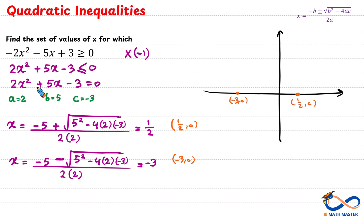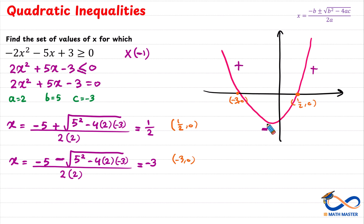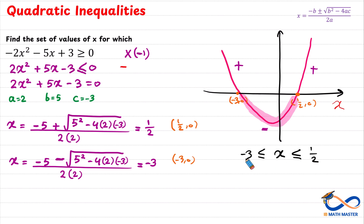Here we have the positive part above and the negative part below. But this time we need our quadratic to be less than or equal to 0 — either 0 or negative. The negative part is only between the two roots. So for every value of x between negative 3 and one-half, the quadratic value will be negative. That's why the solution is negative 3 less than or equal to x less than or equal to one-half. Negative 3 and one-half themselves are included because we have the 'equal to' condition. In interval notation, the solution is from negative 3 to positive one-half.